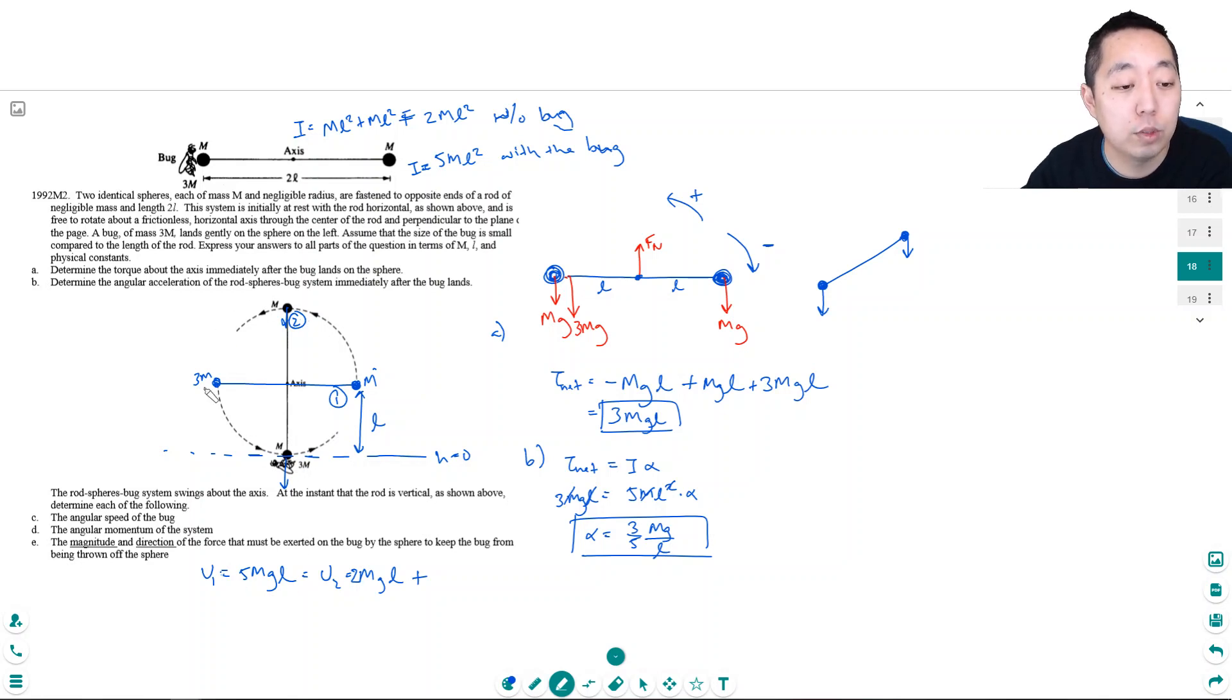One half I·omega squared. Now, this is 2mg·l. This is one half I, that's 5ml squared, and omega is v over r—that's v over l—squared.